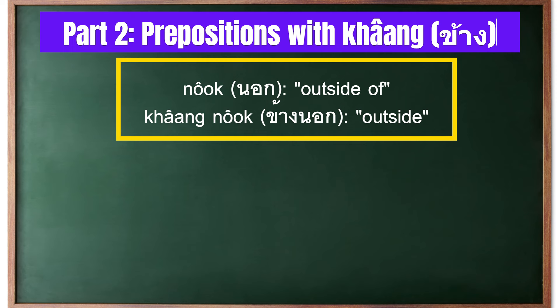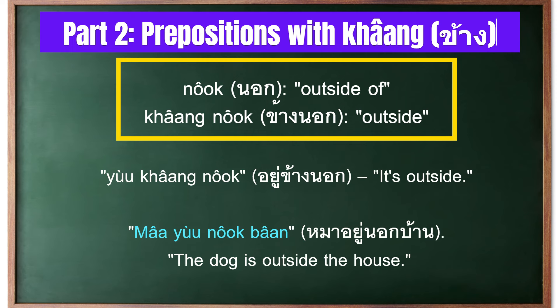Let's move on to another basic preposition. นอก means 'outside of', and ข้างนอก means 'outside'. For example, 'it's outside' is ข้างนอก, 'the dog is outside' is หมาอยู่ข้างนอก, and 'the dog is outside the house' is หมาอยู่นอกบ้าน.